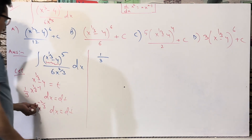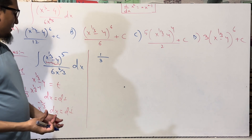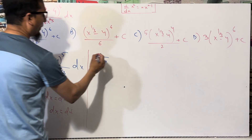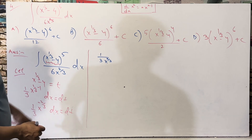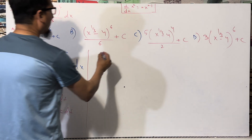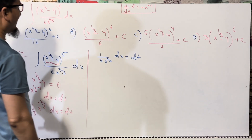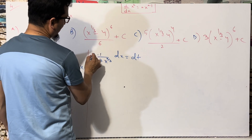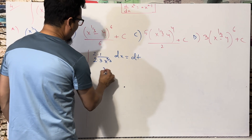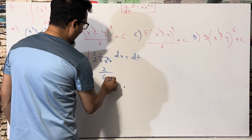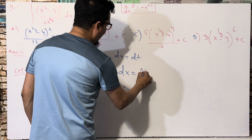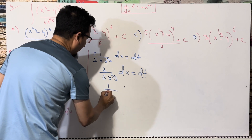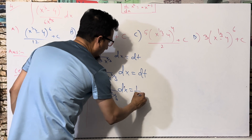We have (1/3)x^(−2/3) dx = dt. Since x^(−2/3) in the denominator becomes x^(2/3) in the numerator, we can write (1/3)·x^(2/3) dx = dt. Multiplying both sides by 2 gives (2/3)·x^(2/3) dx... wait — we want 6 in the denominator. Multiplying by 2 gives 6x^(2/3) dx = 2dt, so (1/6)x^(2/3) dx = (1/2) dt.